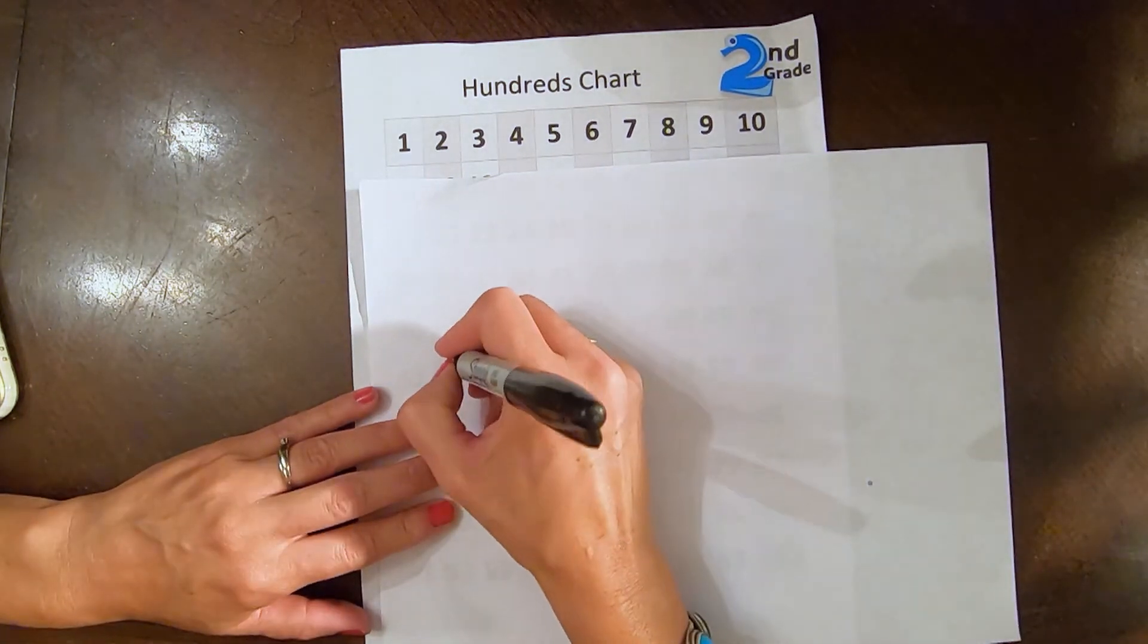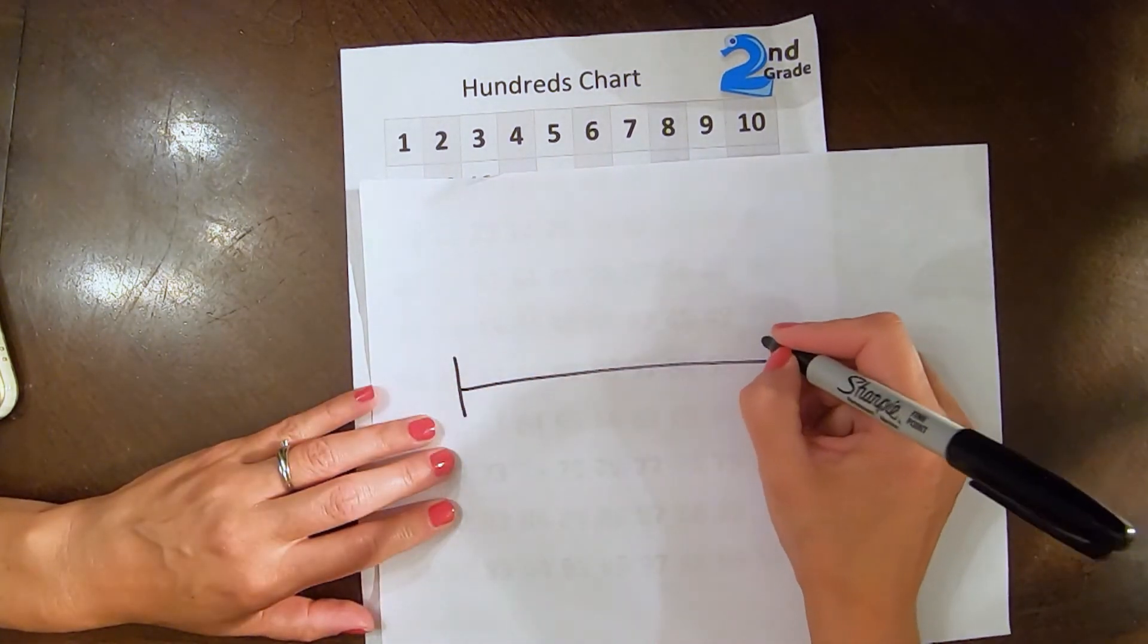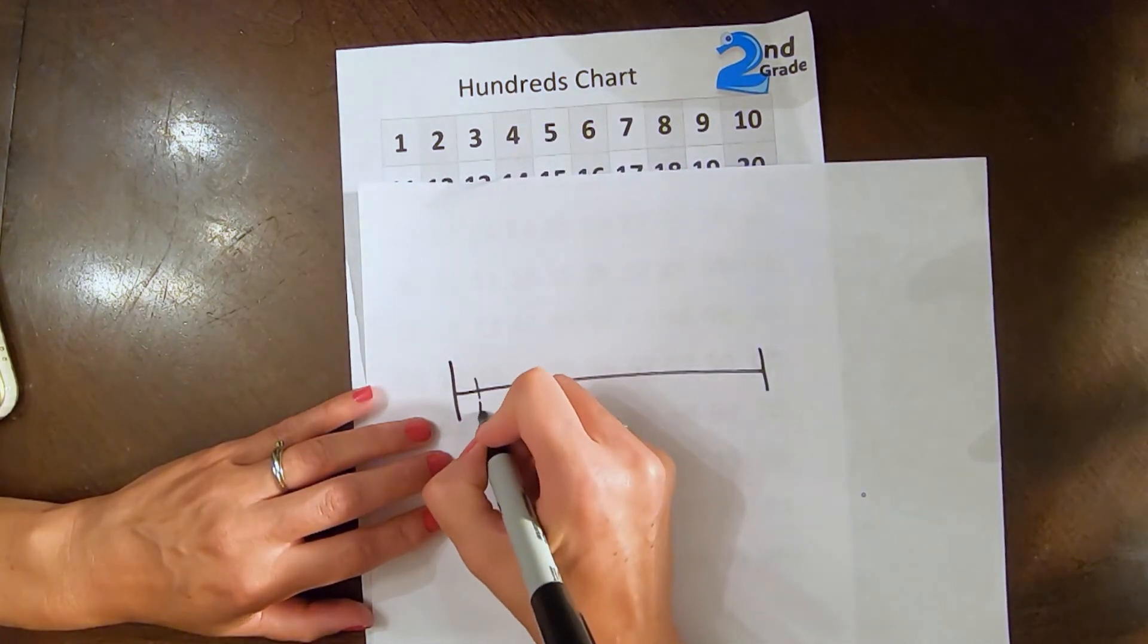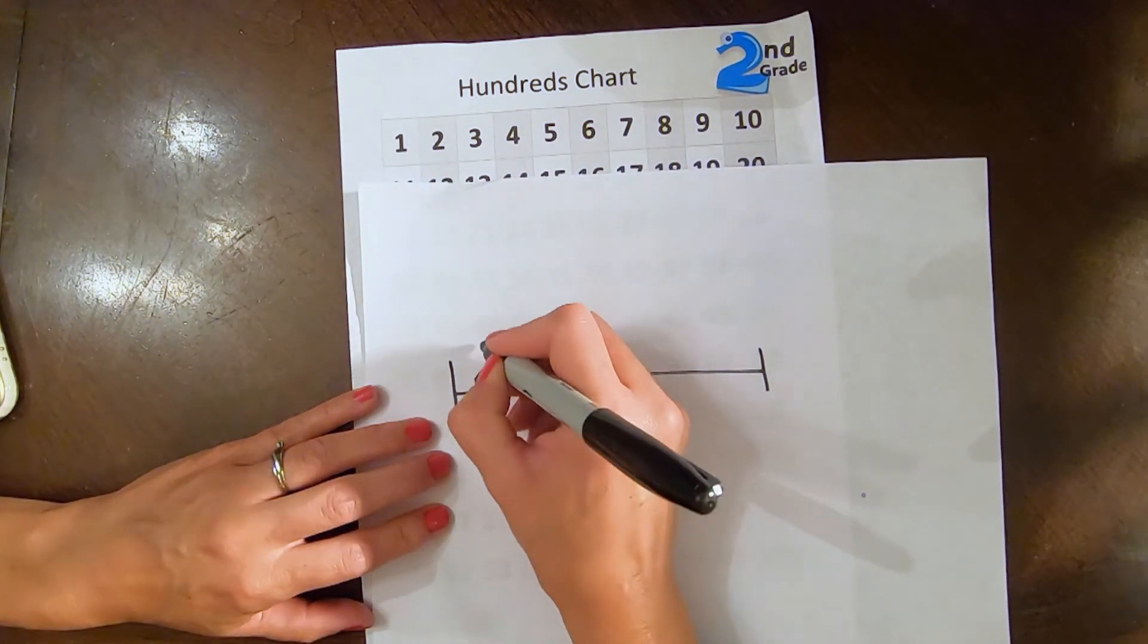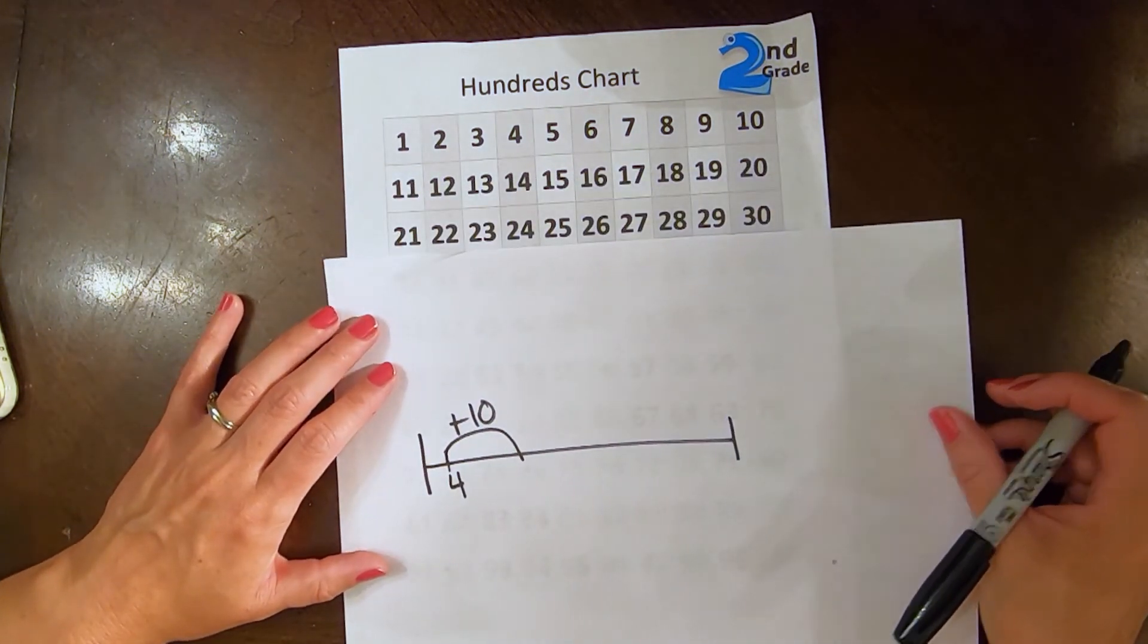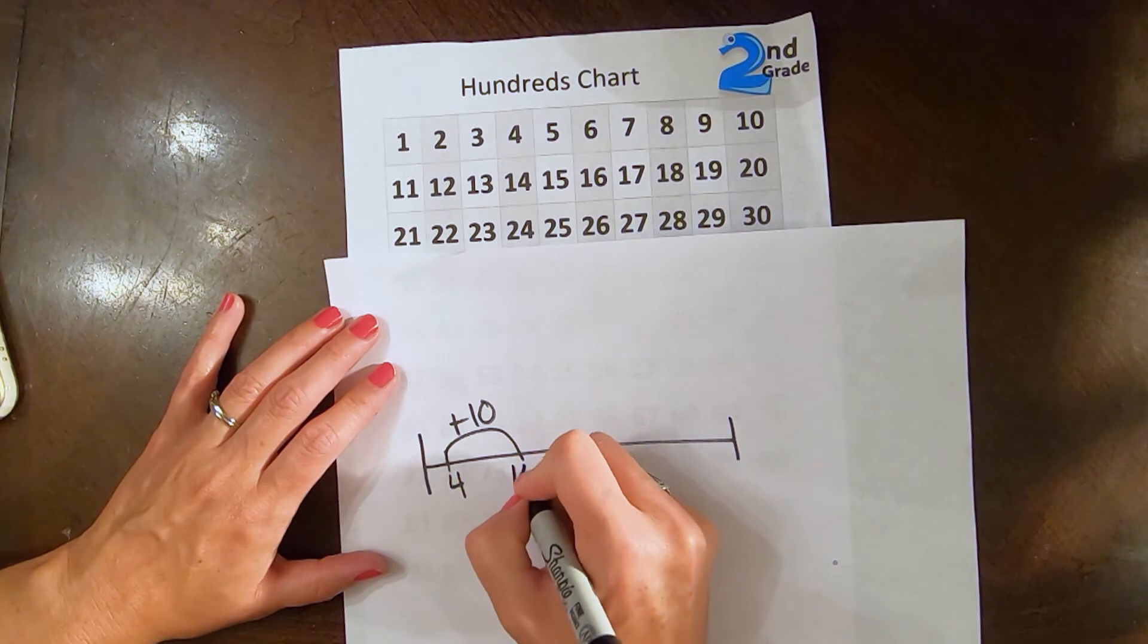If I start with a number that is off the decade, meaning not number 10, we're going to start with number 4. And I add 10, what will be my next number? Yep, you're right. It's going to be 14.